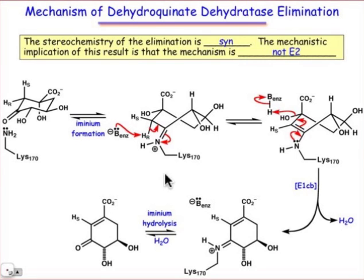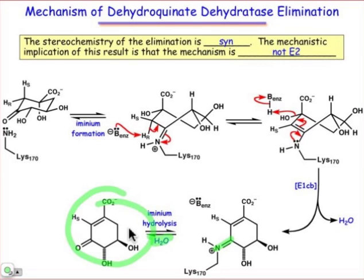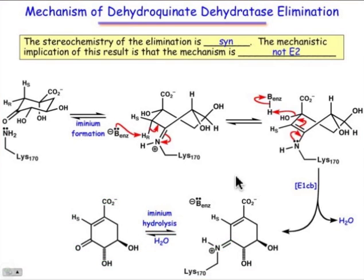Hydrolysis of that iminium ion — that is, we're going to just add water into that — and it follows similarly to what we saw with the aldolase enzyme, producing the final product, which is the dehydroshikimate product that's shown here.